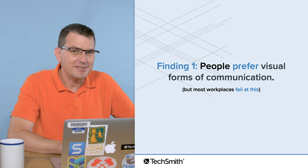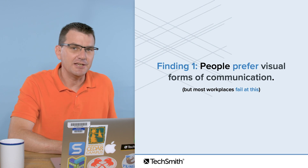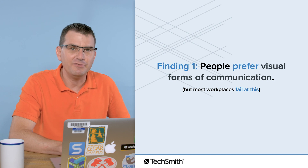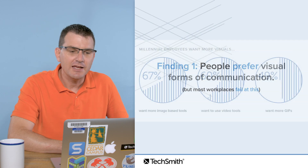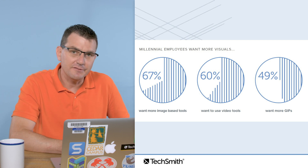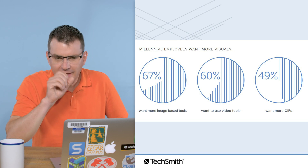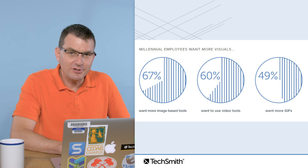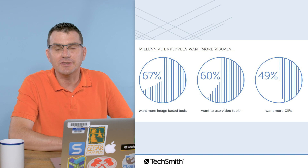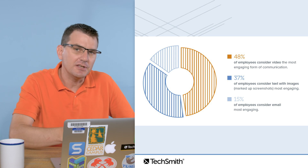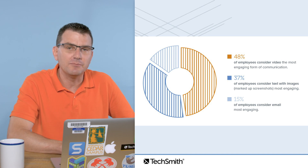In the first section, we found that people have a marked preference for visuals in their communication and in technical content they use to learn new technologies or processes at work. But most workplaces fail at delivering this — a lot of content is just a wall of text. Particularly among millennials, there's a very strong preference for images, videos, and even animated GIFs rather than text only. And millennials are a growing — now dominant — percentage of coworkers, colleagues, and customers. This preference actually extends beyond millennials to the broader workplace population.